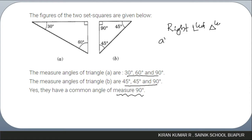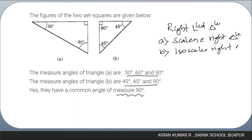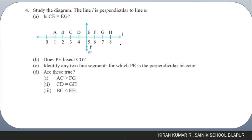The first set square is a scalene right-angled triangle, and the second one is an isosceles right triangle. A scalene right triangle has all sides different, while in an isosceles right triangle the two sides adjacent to the 90-degree angle are equal to each other.